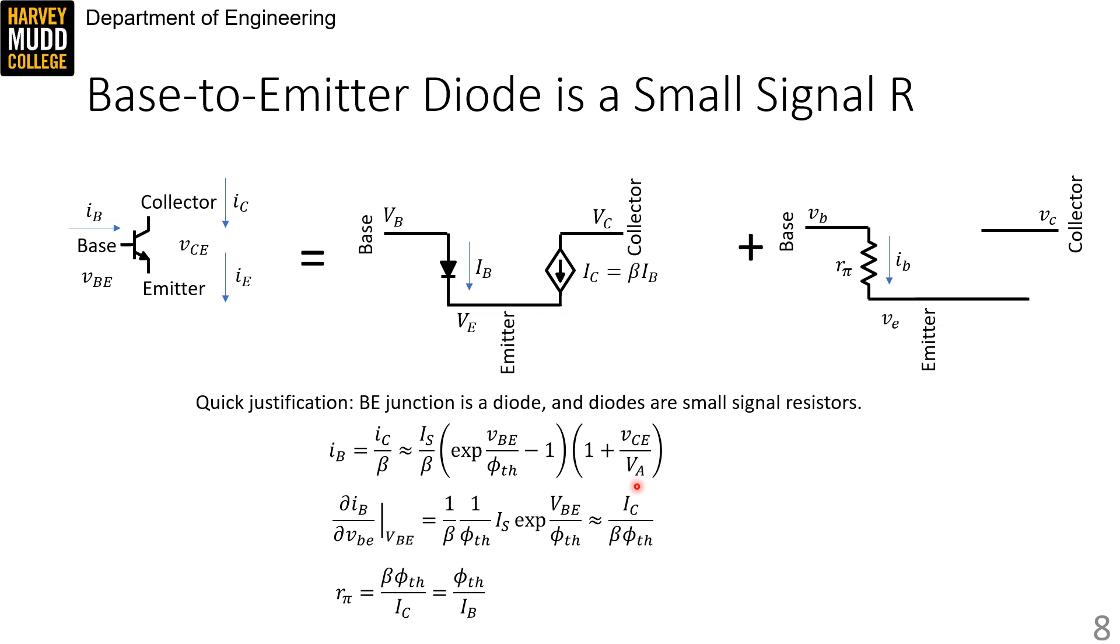So we take our derivative at the large signal VBE bias point, which gives us an expression that contains, over here, I_s times e to the VBE over phi TH. And we pulled down this 1 over phi TH from the exponential when we took the derivative.